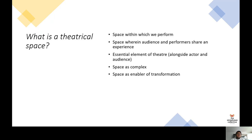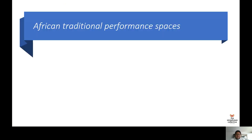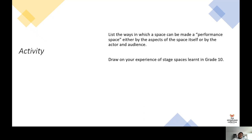That is basically what the theatrical space is — how space is made up and what rules govern it. You know that space is political. I want you to reflect by doing an activity: list the ways in which a space can be made a performance space, either by aspects of the space itself or by the actor and the audience. Draw on your experience of stage spaces learned in Grade 10 — theatre in the round, proscenium arch, etc.